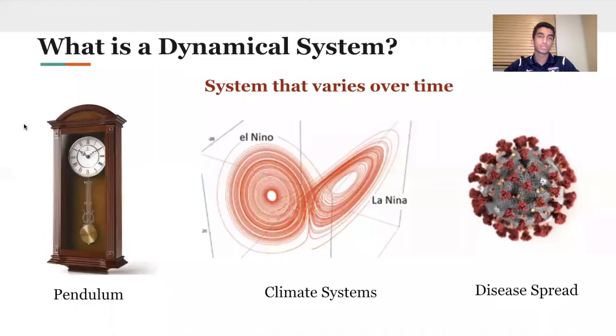So the first thing I'll do is what is a dynamical system? What do models that model the swing of a pendulum, climate systems, and disease spread all have in common? They can be modeled in systems that vary with time.